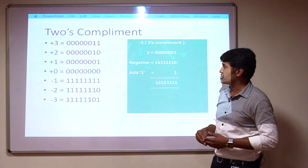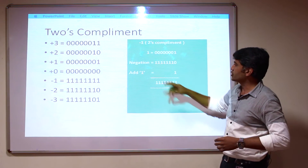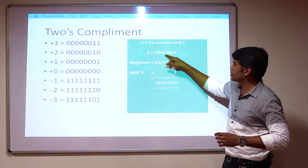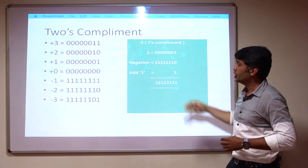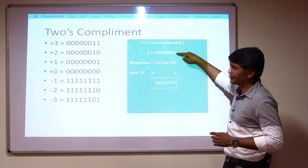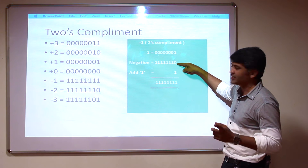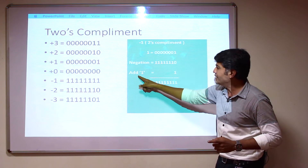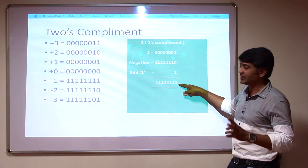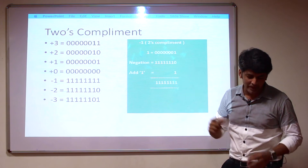These are the sample representations: plus 3, plus 2, plus 1, 0, minus 1, minus 2, minus 3. For example, find how the 2's complement is represented for minus 1. Start with 1 in 8-bit: 00000001. Take the bitwise complement — all 0s become 1s and the 1 becomes 0 — giving 11111110. Then add 1 to the least significant bit, yielding 11111111. This is the 2's complement representation for minus 1.